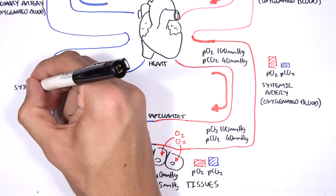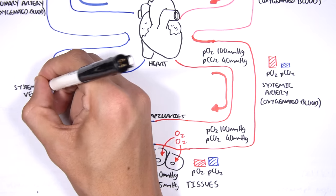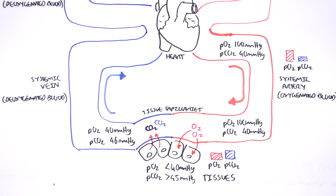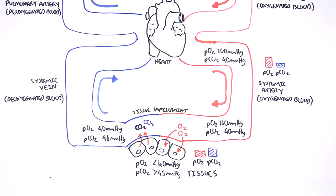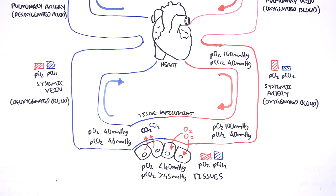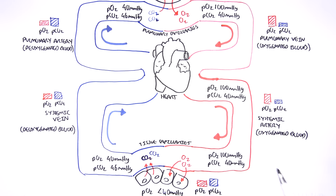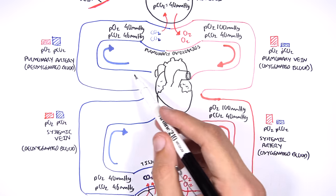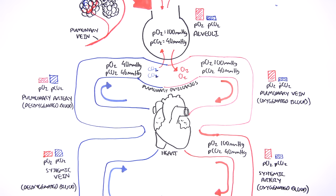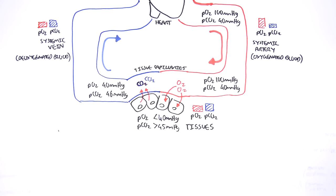This deoxygenated blood travels through the systemic veins and returns to the heart. The heart then pumps this deoxygenated blood supply to the lungs through the pulmonary arteries, where it will be reoxygenated and the cycle continues.